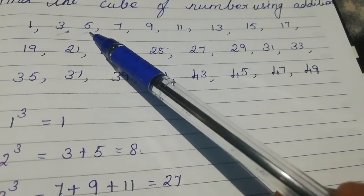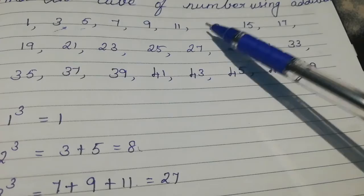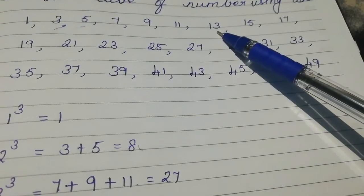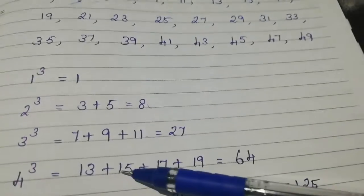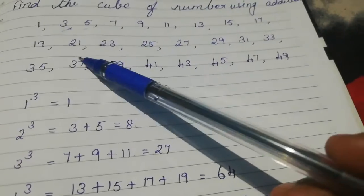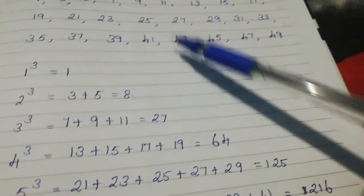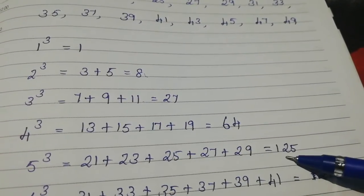Already I have written 1, 3, 5, 7, 9, 11, so next 4 cube, we take the next four numbers: 13, 15, 17, 19. The value is 64. Similarly, 5 cube: 21, 23, 25, 27, plus 29 is equal to 125.